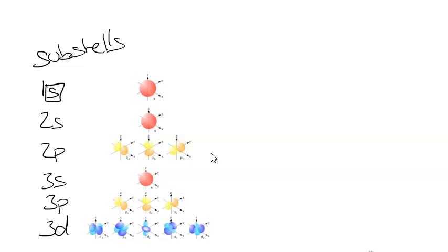So within each subshell there's a certain number of orbitals. Within every s subshell there is 1 orbital, and that orbital can have 2 electrons. Every orbital can have 2 electrons. So it doesn't matter about the energy level, it just matters about which subshell it is that determines the number of orbitals. Every 2s, 3s, 1s, they all contain 1 orbital, which can contain 2 electrons.